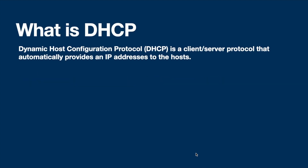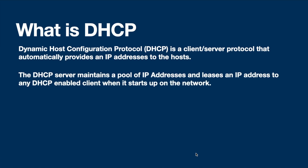So what is DHCP? Basically, DHCP — Dynamic Host Configuration Protocol — is a client-server protocol that automatically provides IP addresses to the hosts. The DHCP server maintains a pool of IP addresses and leases an IP address to any DHCP-enabled client when it starts up on the network.